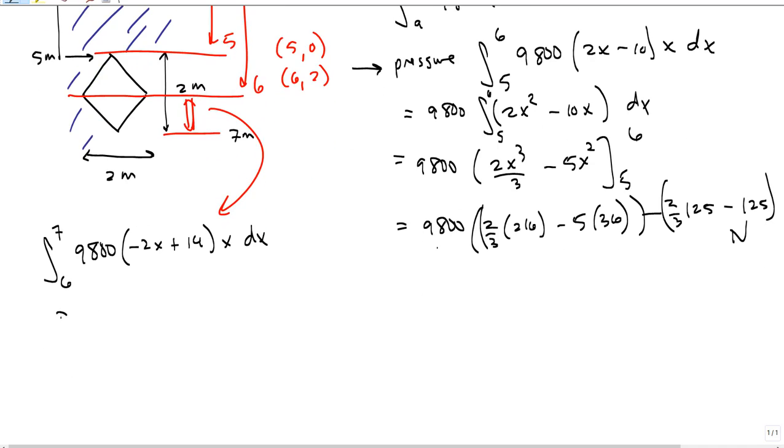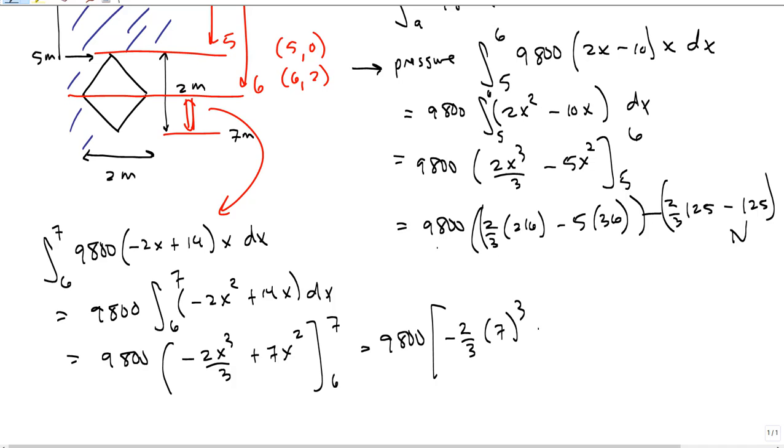So this is 9,800 times the integral from 6 to 7 of negative 2x squared plus 14x dx, which becomes 9,800 times negative 2x cubed over 3 plus 7x squared, evaluated from 6 to 7. The arithmetic becomes the worst part of a lot of these - negative 2/3 times 7 cubed plus 7 squared, minus negative 2/3 times 6 cubed plus 7 times 36. That's also newtons.